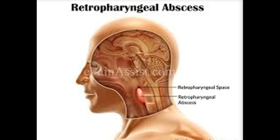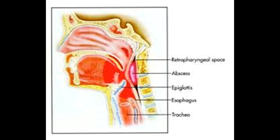How to Treat and Cure Retropharyngeal Abscess. A retropharyngeal abscess means you have pus in the tissue at the back of your throat. This often occurs during or after a throat infection. This type of abscess mostly occurs in children under 5, however it can occur at any age.